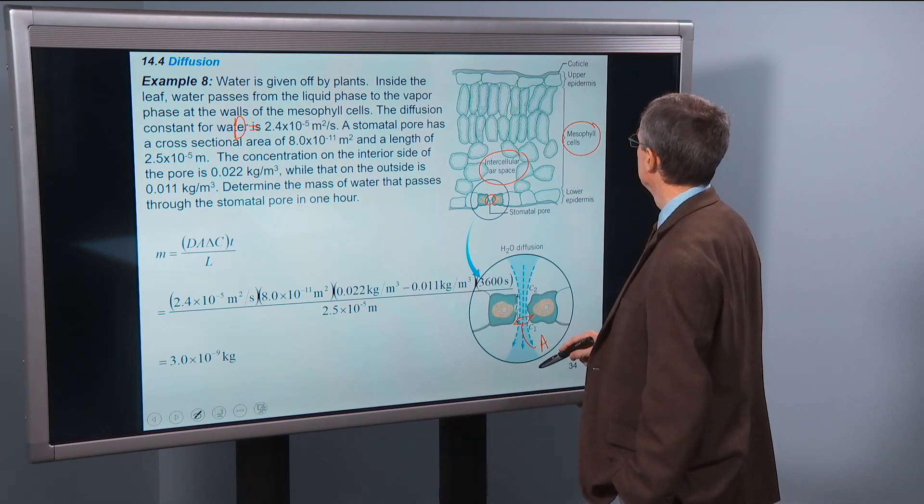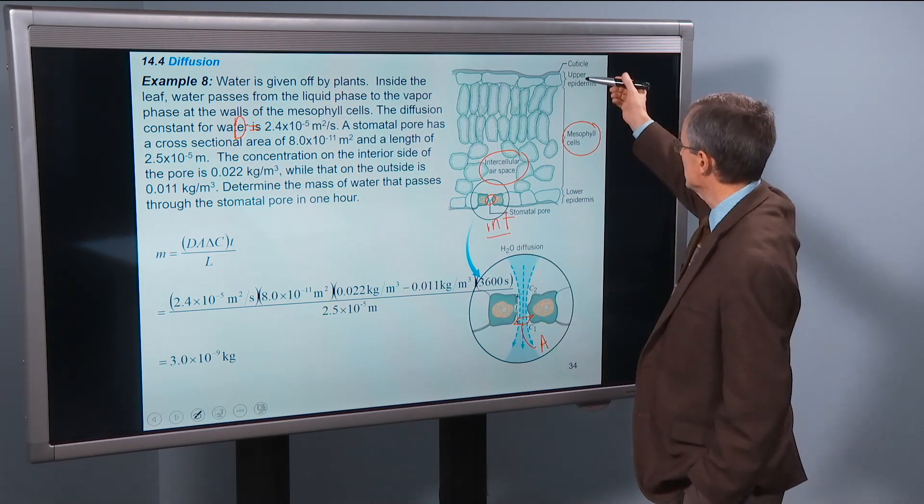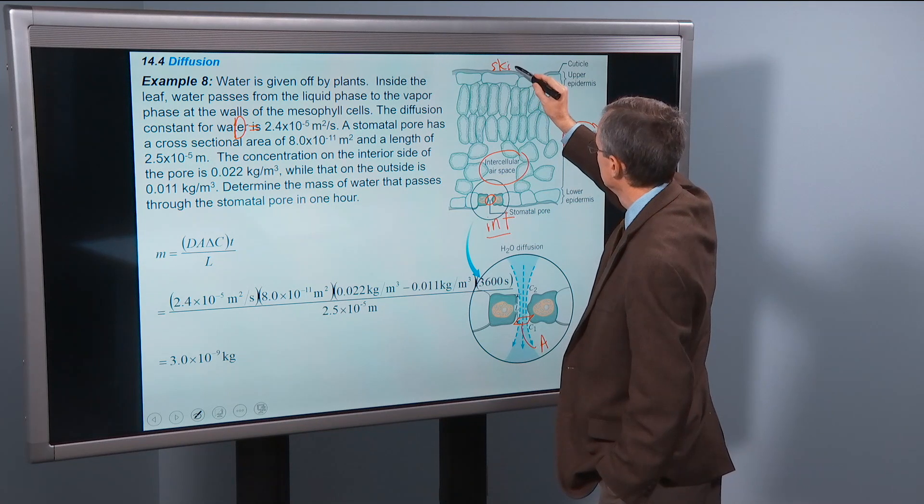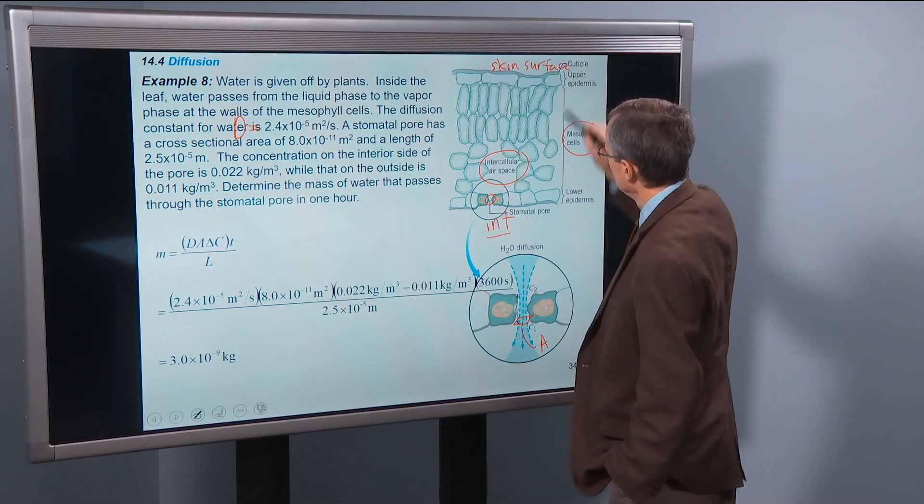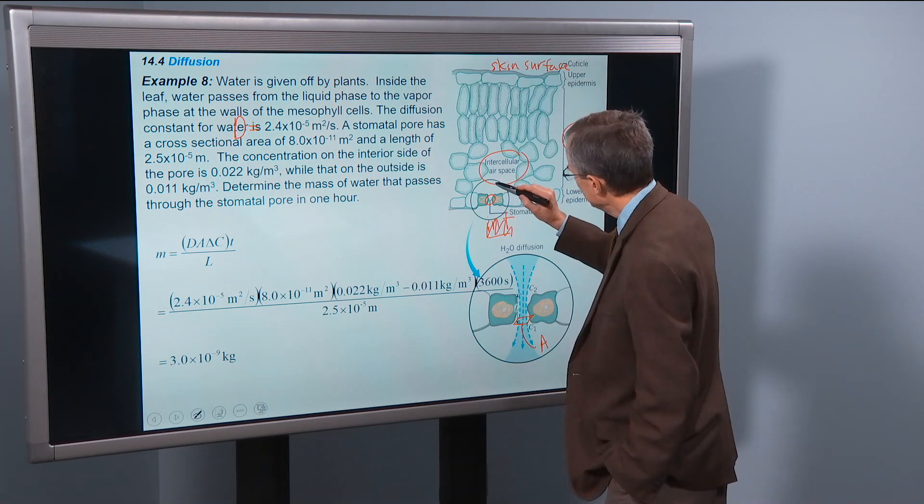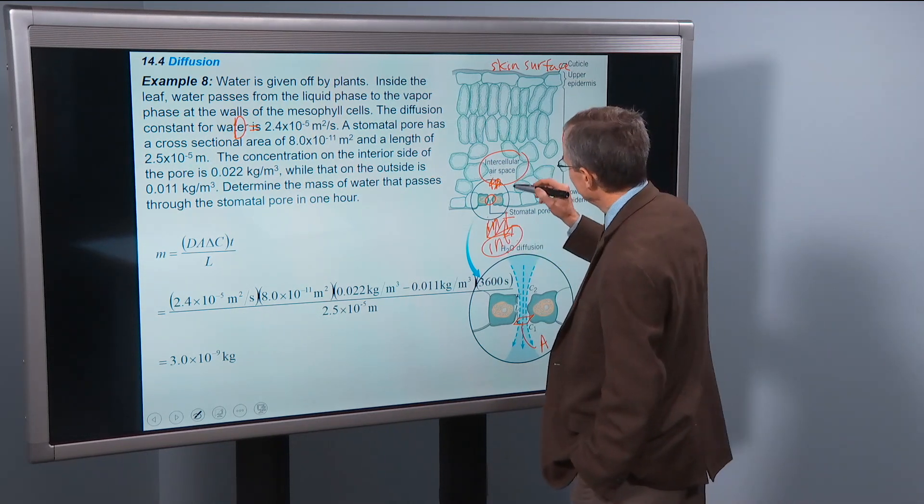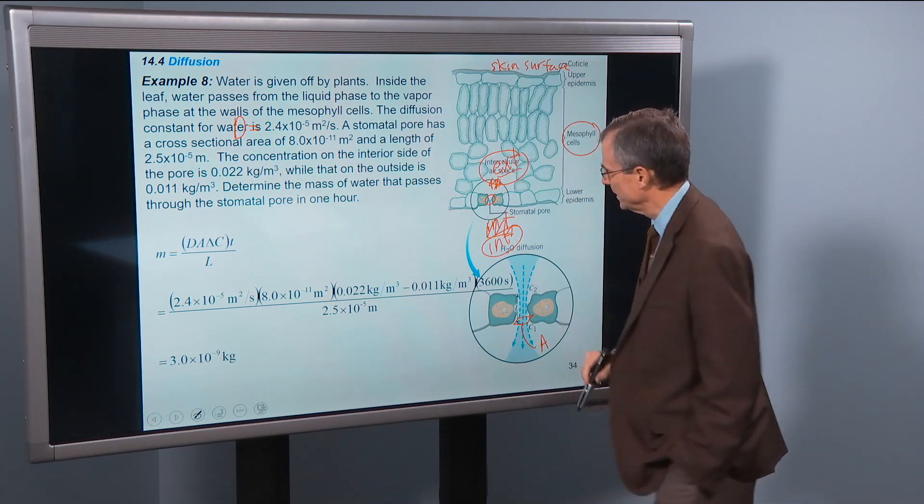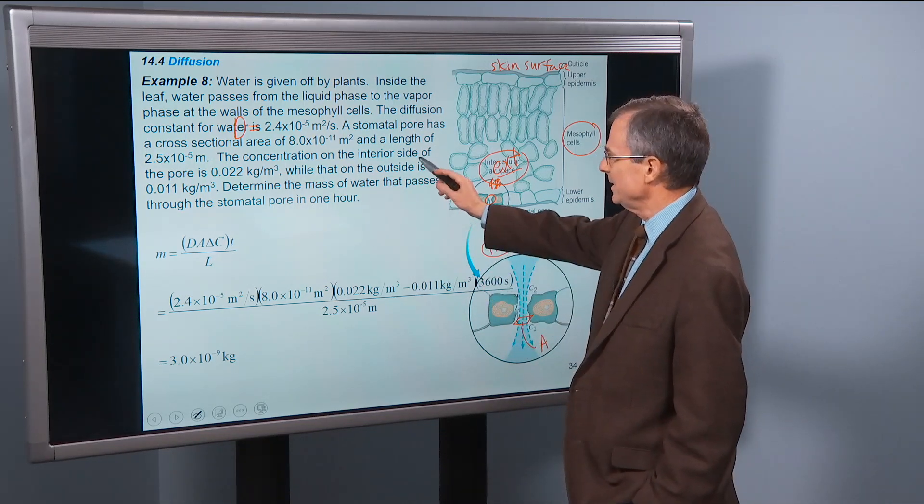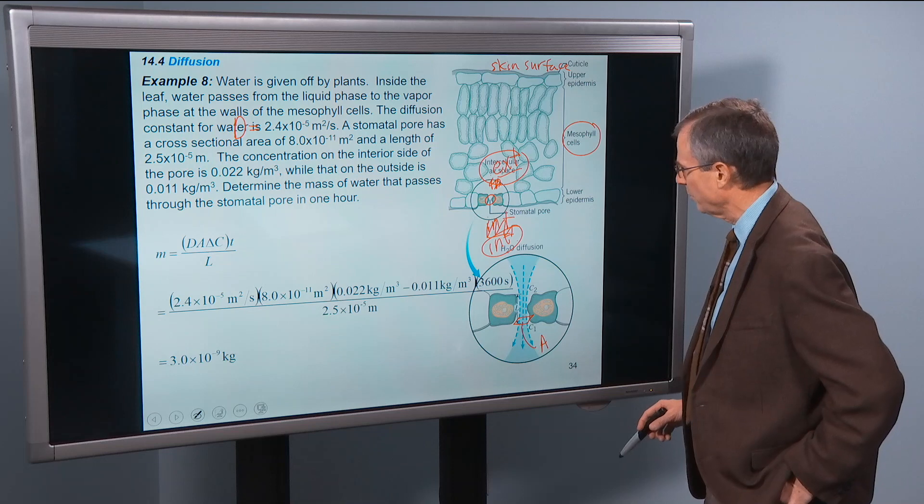So here's the interior side and here's the exterior. Let's see. Upper epidermis. So interior must be in here. That's interior to the body. This is upper epidermis near the surface. So here's the surface of the skin. So this must be the interior side of the stomatal pore, and this will be the exterior side toward the outside world up here. Anyway, the interior side is 0.022. The concentration on the outside is 0.011. Determine the mass of water that passes through the stomatal pore in one hour.